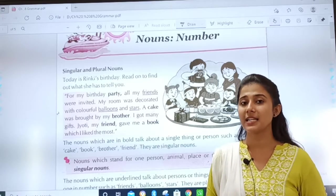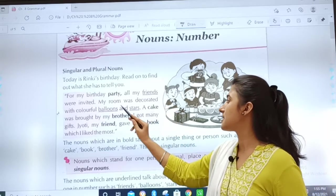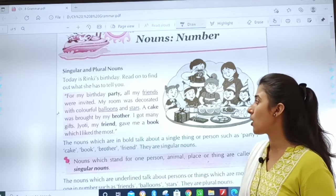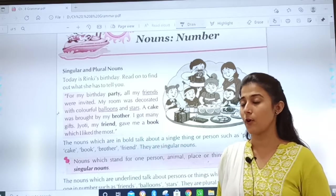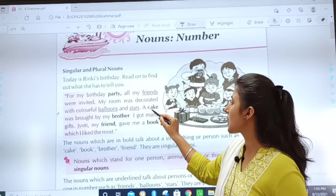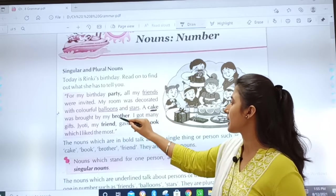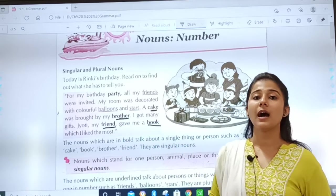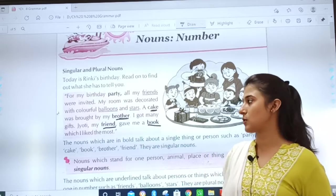I got many gifts. Jyoti, my friend, gave me a book which I liked the most. Now children, see what all words were underlined. Friends, balloons, stars. Why? Because they are plural form. And the nouns which are in bold letters, see. Cake, brother, friend and book are singular nouns.